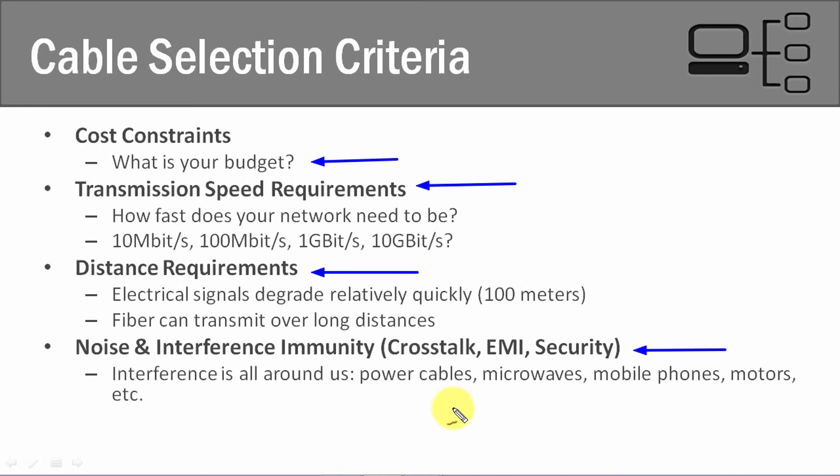So those are the high-level criteria that we need to think about. To recap: we need to think about our budget and budgetary constraints, our transmission speed requirements both now and in the future, our network distance requirements both now and in the future, and our noise and interference immunity as well as our security concerns. That's going to conclude this video. If you have any questions, let me know. If not, thanks for watching and we'll see you at the next video.